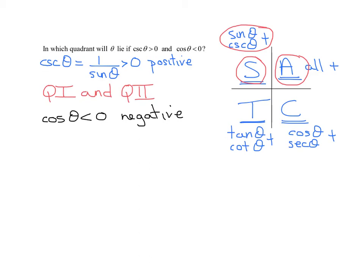We know where the cosine is positive. It's positive in quadrant 1, and it's also positive in quadrant 4. Therefore, it is negative in quadrant 2 and quadrant 3. So the second part is true in quadrant 2 and quadrant 3.